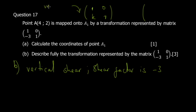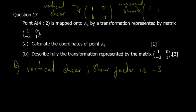The shear factor is negative 3. This is a vertical shear of shear factor negative 3. The horizontal shear formula is [1, k; 0, 1] and the vertical shear formula is [1, 0; k, 1], where k is an integer.